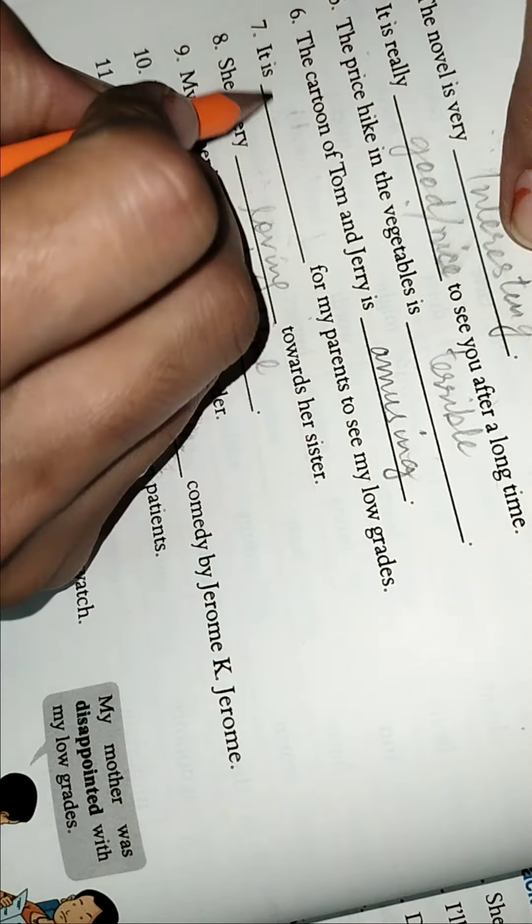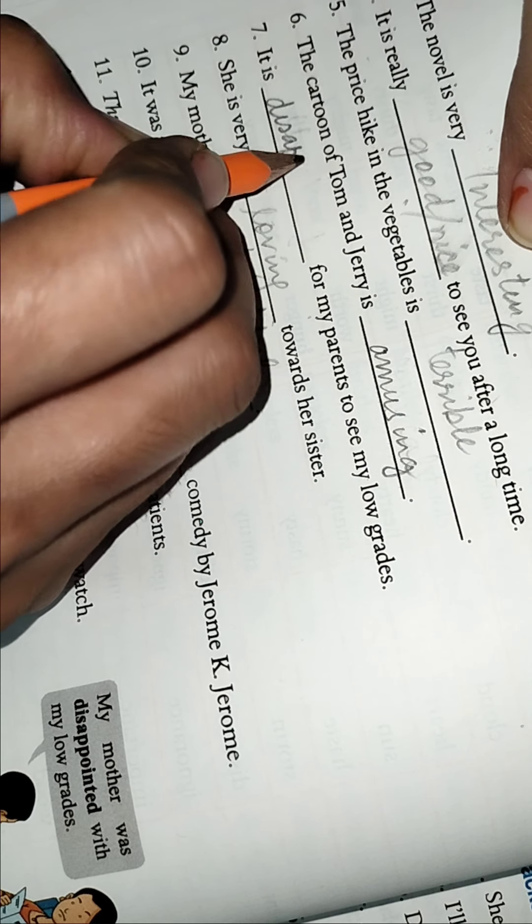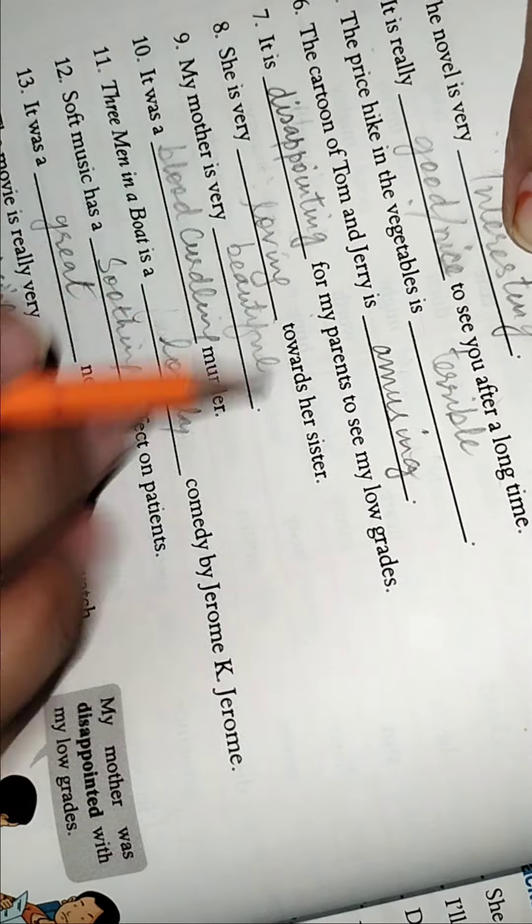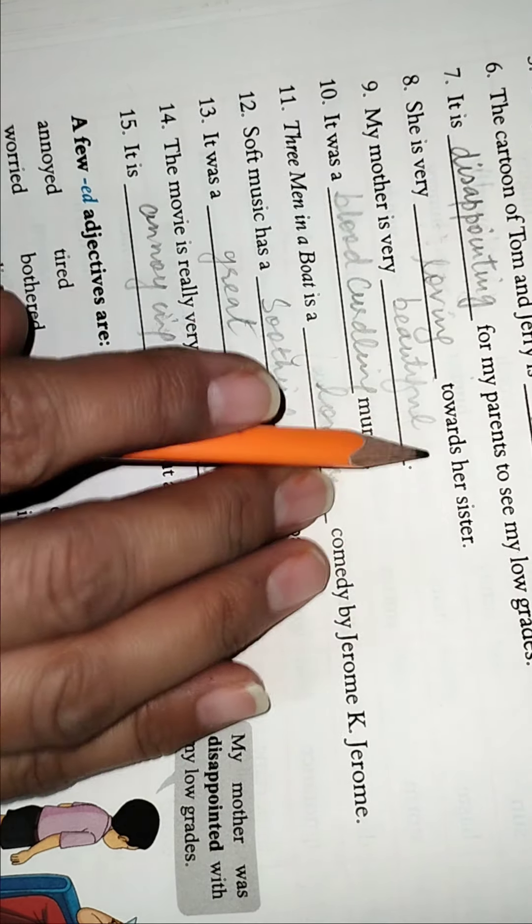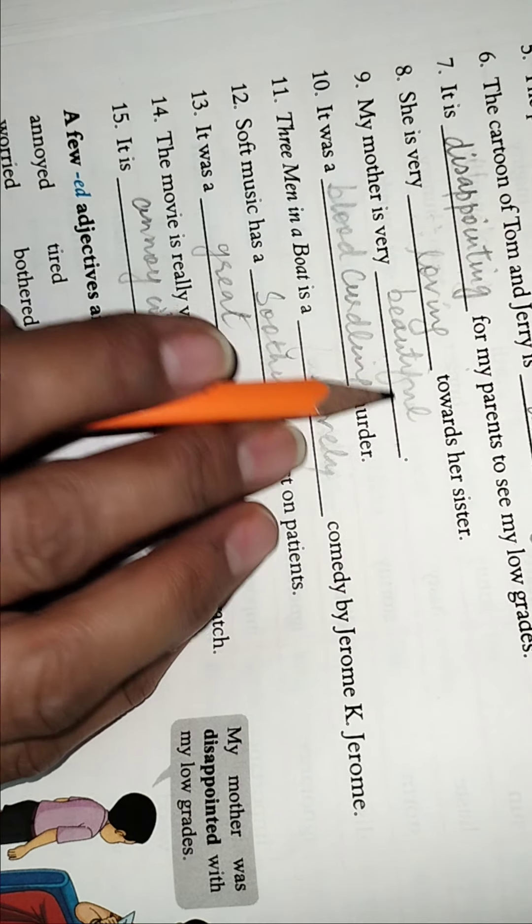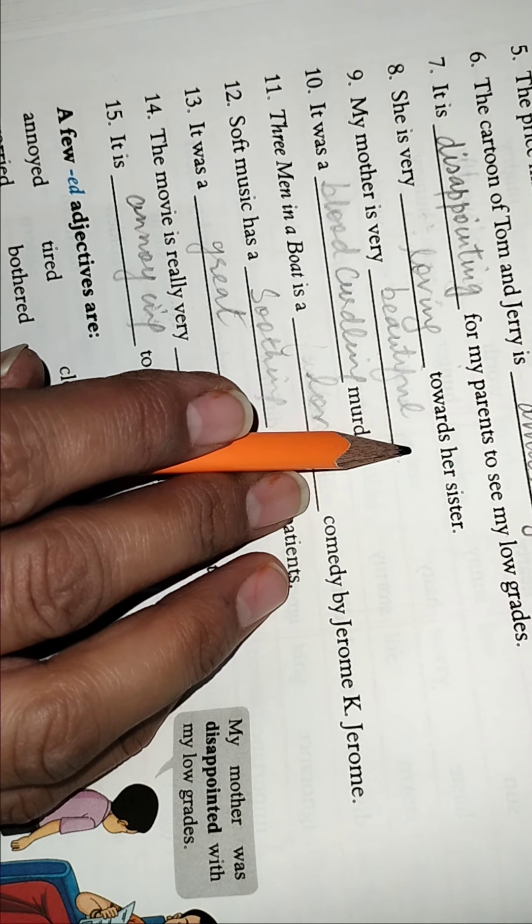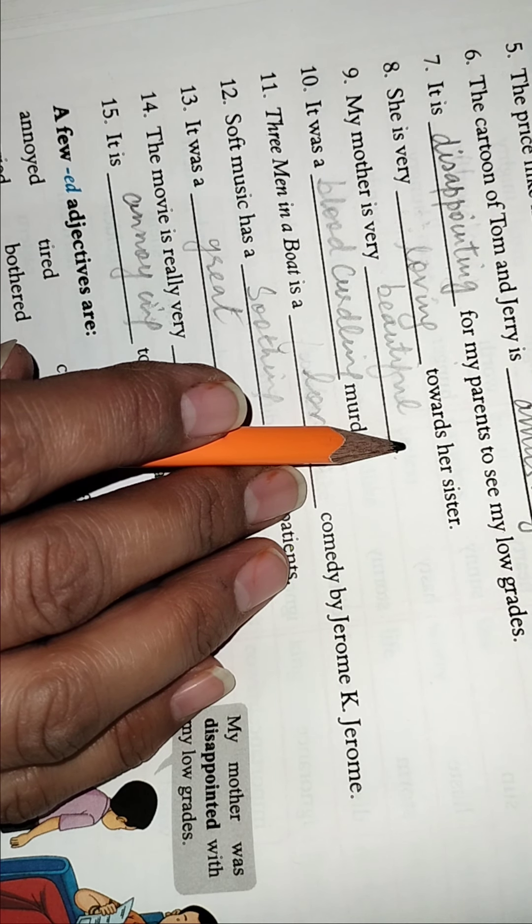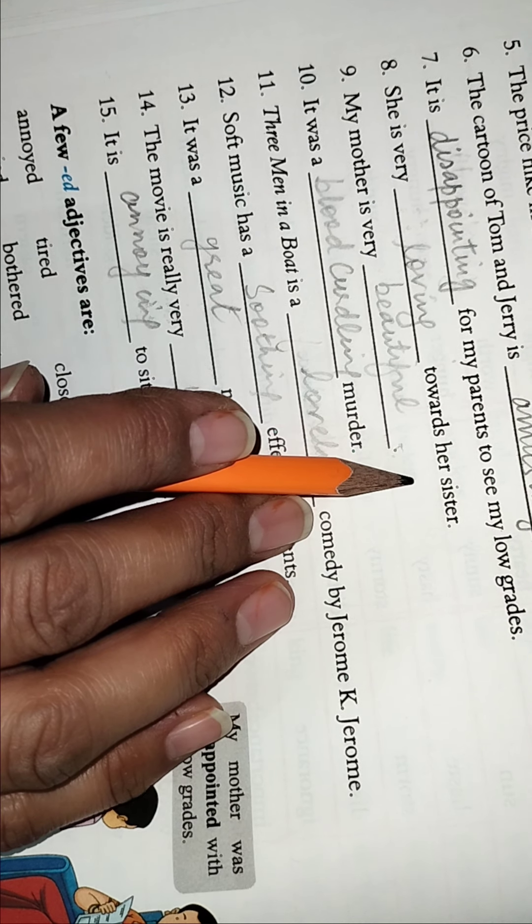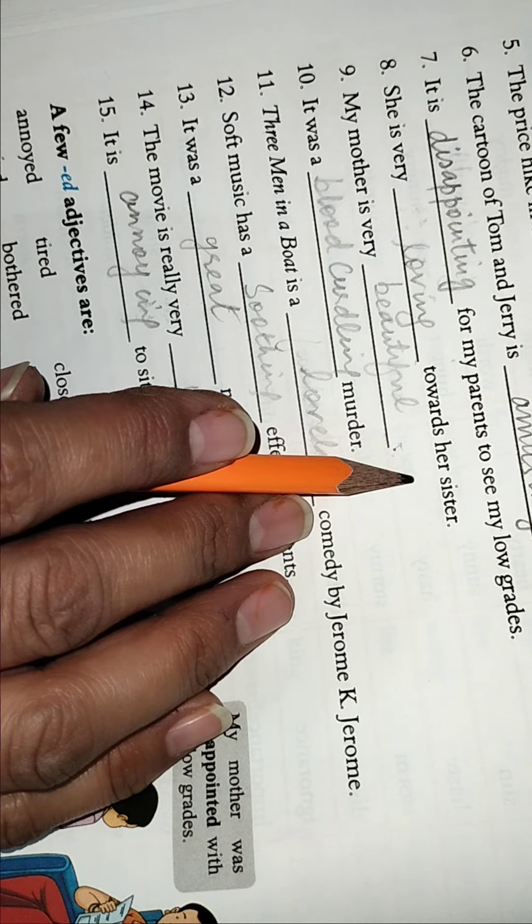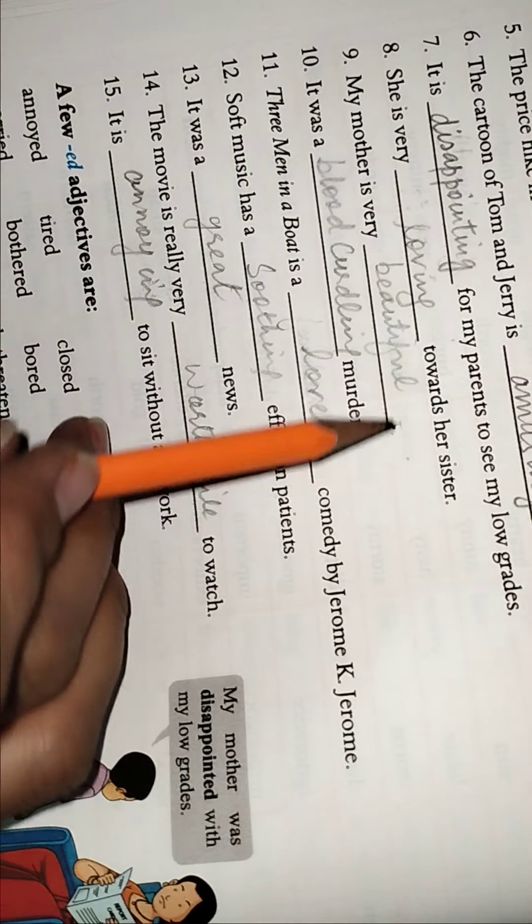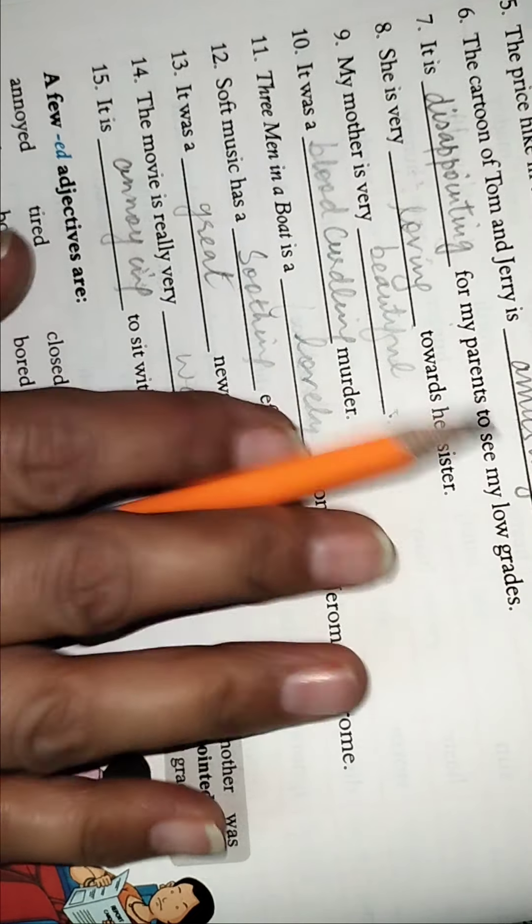It is shocking. It is disappointing for my parents to see. Disappointing bhi likh sakte hain, ya iss jagah likh sakte hain, ya is jagah, any word, also disappointing theek hai, disappointing, annoying, worrying, tiring. So either we can write disappointing or annoying, it is very disappointing.